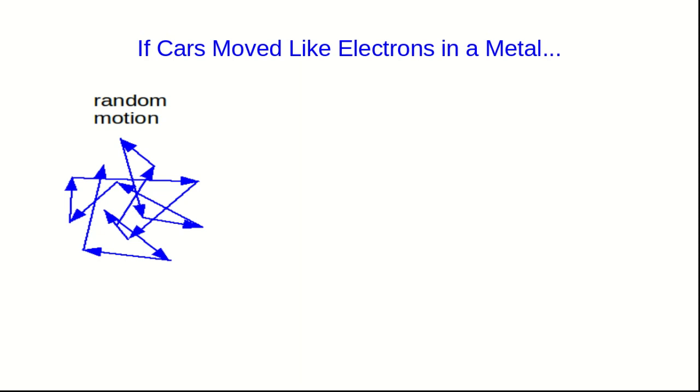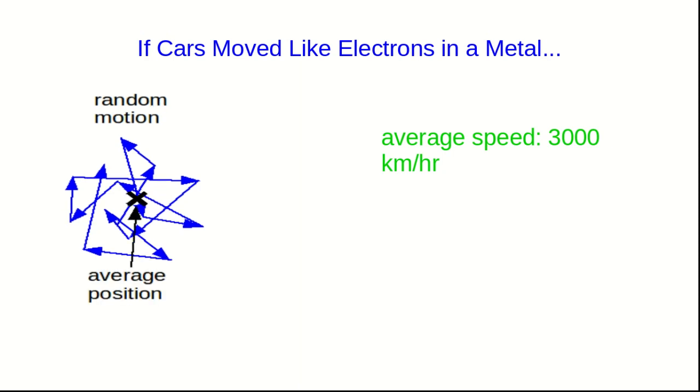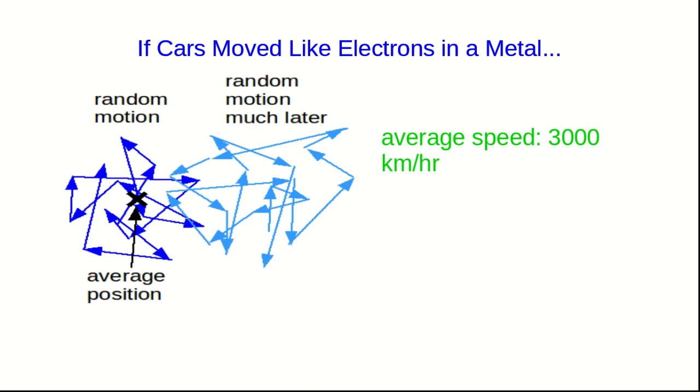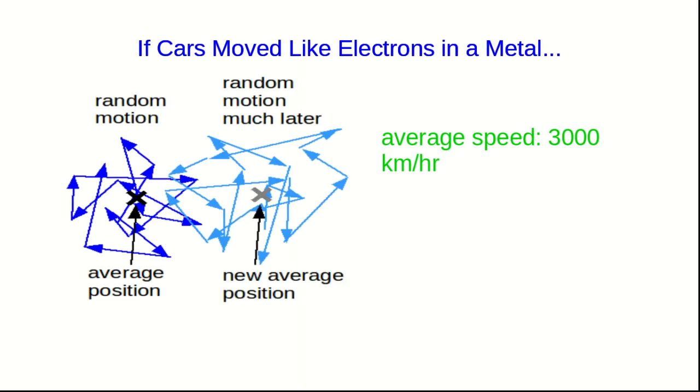And so you are ricocheting off these concrete pylons moving extremely fast in between. And by extremely fast, I'm going to say, suppose it's about 3,000 kilometers per hour. And now over time, your average position gradually drifts down the highway so that sometime later, you're at a new average position, still zipping around between the pylons, ricocheting off them at 3,000 kilometers per hour.